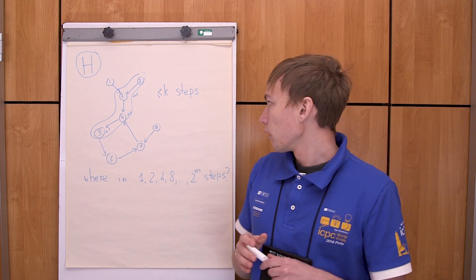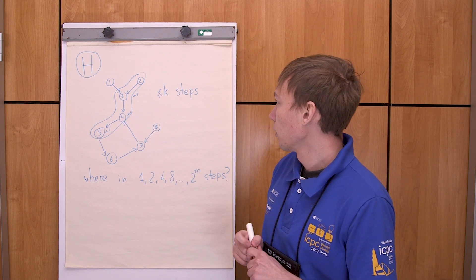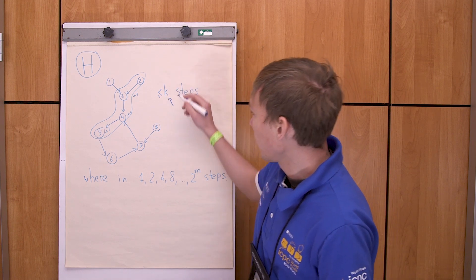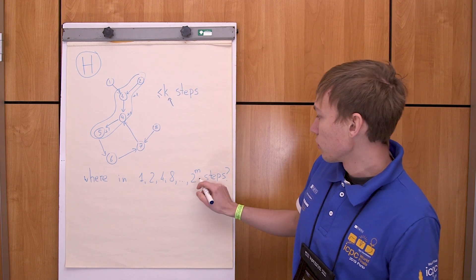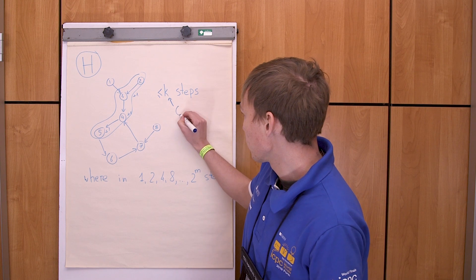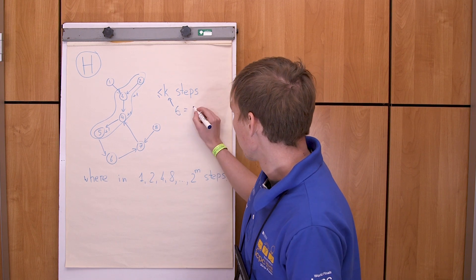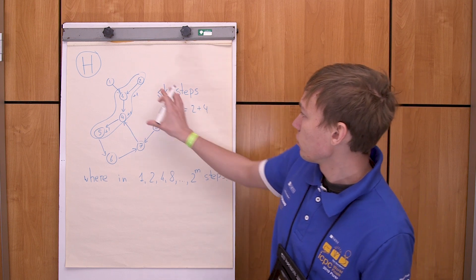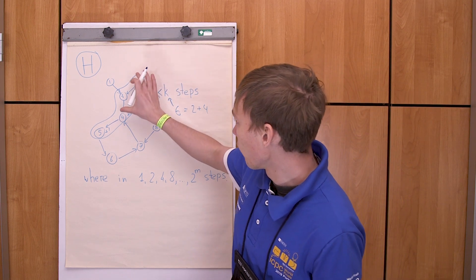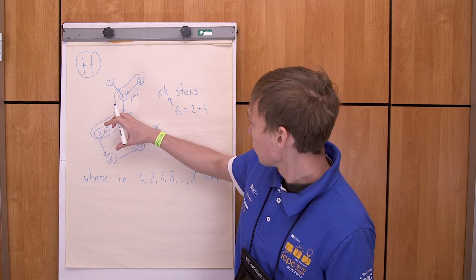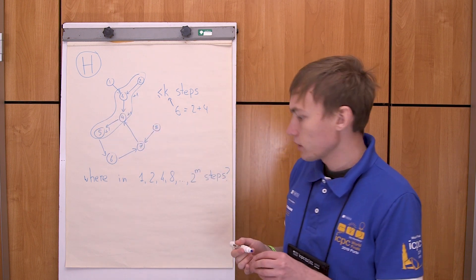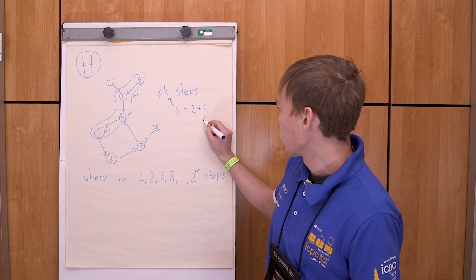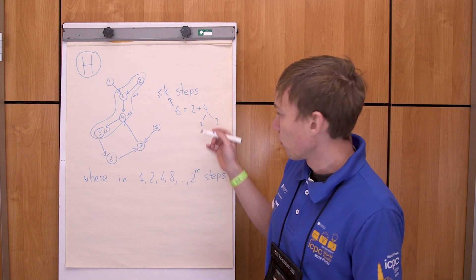So you can just split k into powers of two. For example, if k is six you can split it as two plus four, and you can say that you add one to the first four vertices and then you can add one to the next two vertices. You can also split four as two plus two and so on.